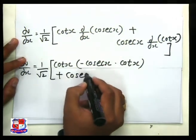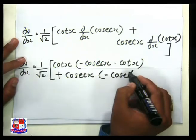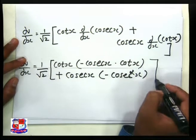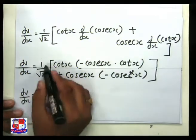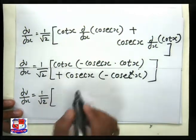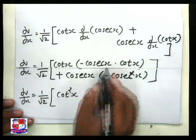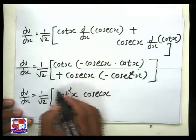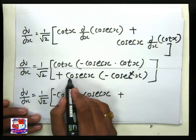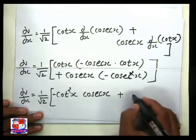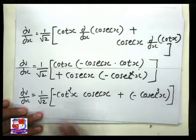We have cos x as it is, and the differentiation of cot x is minus cosec² x, completing the bracket. Simplifying dv/dx: 1 upon √2, with cot x terms and minus cosec² multiplied by cos x gives minus cot² cosec x, then plus cosec x and cosec² x gives minus cosec³ x, completing the bracket.